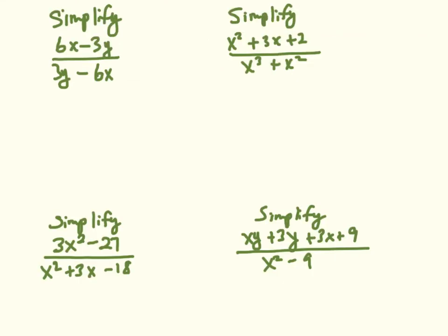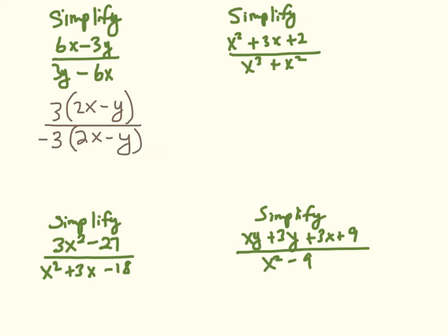I have 6x minus 3y over 3y minus 6x. I factor out 3 from the numerator, giving 2x minus y. I factor out negative 3 from the denominator, putting the x term first to get 2x minus y. The (2x minus y) factors cancel, the 3 and negative 3 cancel leaving negative 1 behind, so the answer is negative 1.